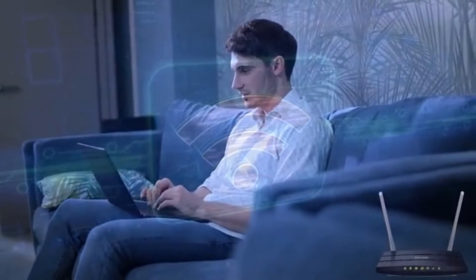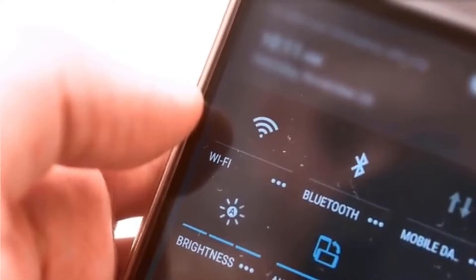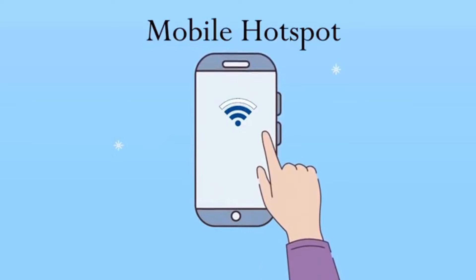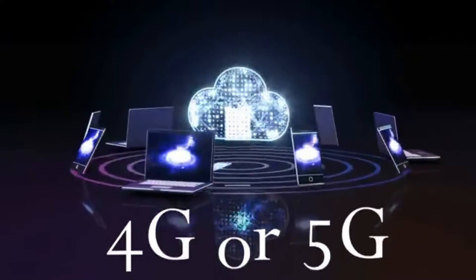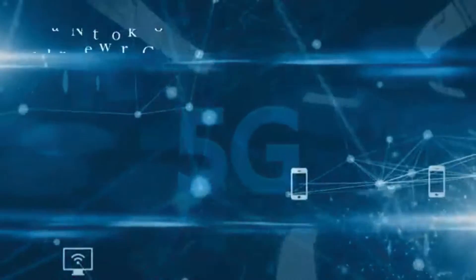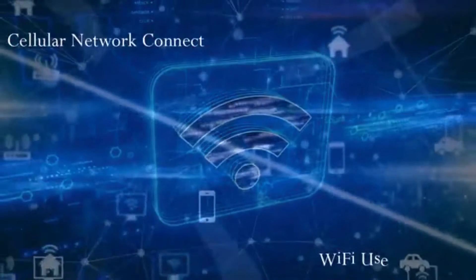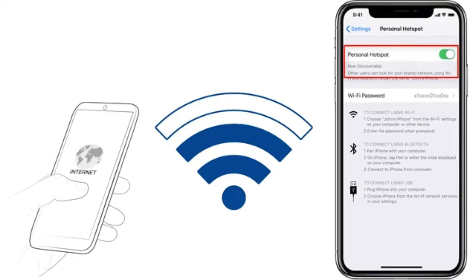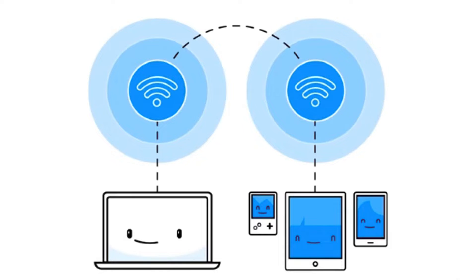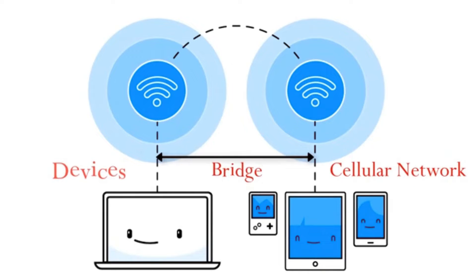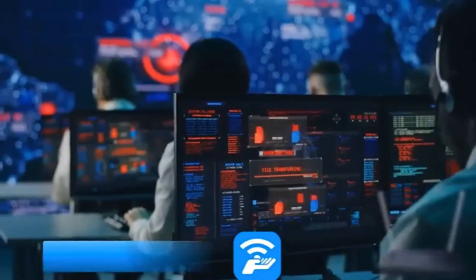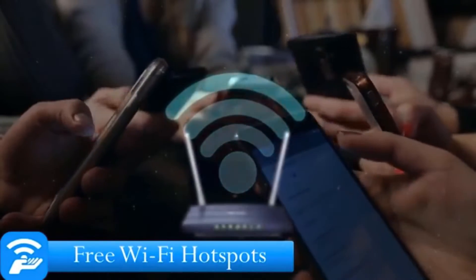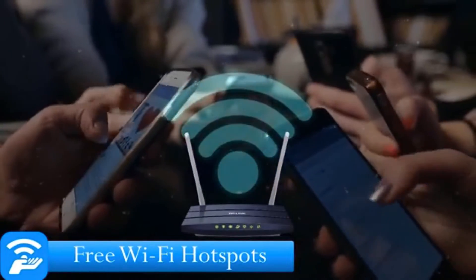Hotspots can be in private locations as well as in public locations such as airports, coffee shops, hotels, hospitals, libraries, and supermarkets. Sometimes the difference between hotspot and Wi-Fi is not understood, so let's clarify. Wi-Fi is the technology that allows your smartphone or computer to access the internet through a wireless connection, using radio signals to send and receive data between your enabled devices. Wi-Fi is a wireless communication technology used for local area networks, whereas a hotspot provides internet to wireless devices using Wi-Fi.